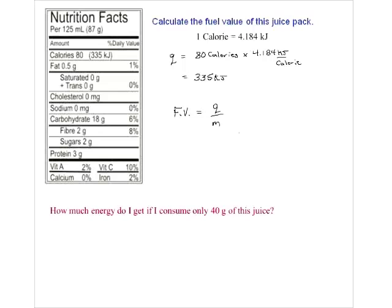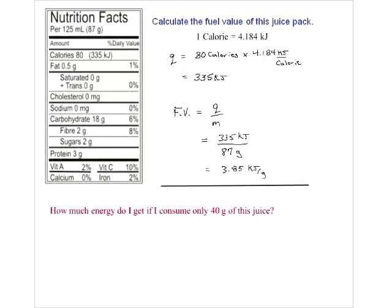If we want the fuel value of the juice, we know 87 grams gives us 335 kilojoules. For comparison purposes, we convert to a per-gram basis. So 87 grams gives this much energy - how much would one gram give? We divide 335 by 87 grams and find that every gram of juice pack gives 3.85 kilojoules.